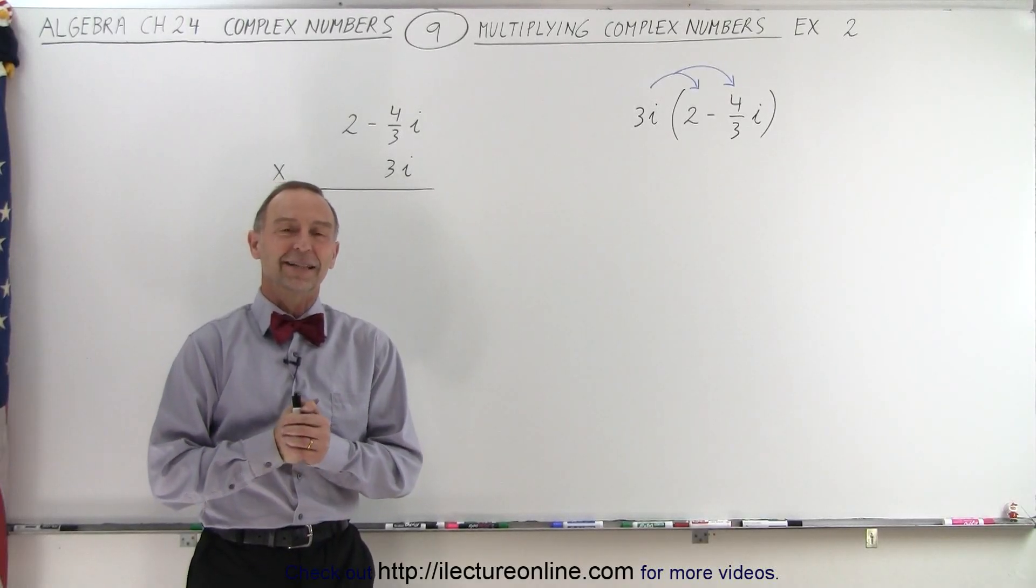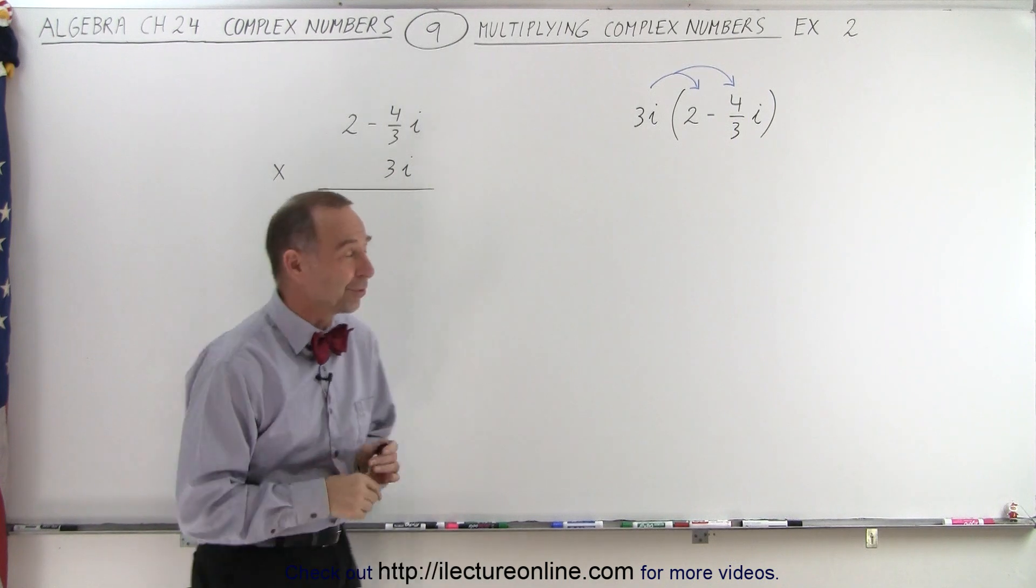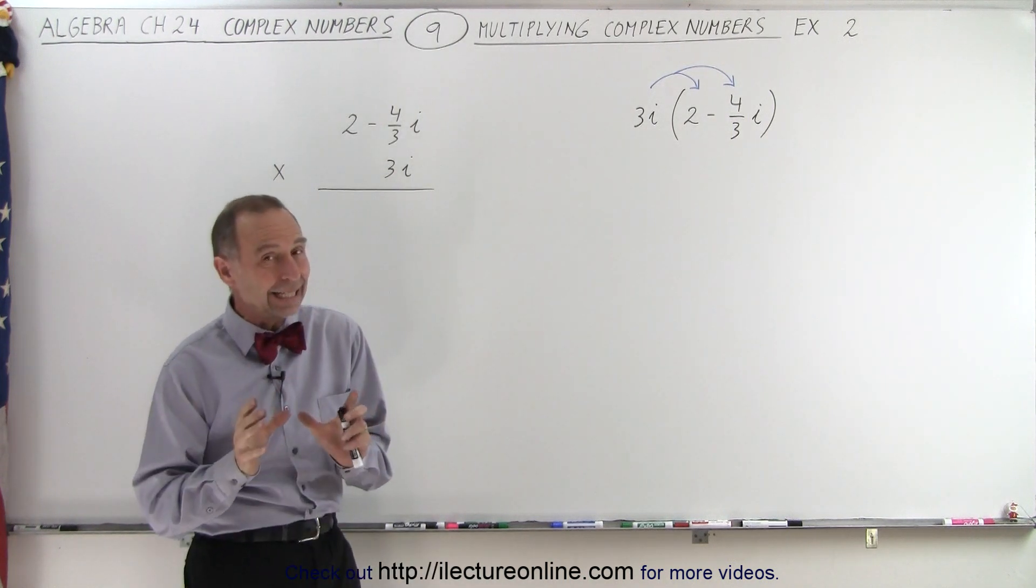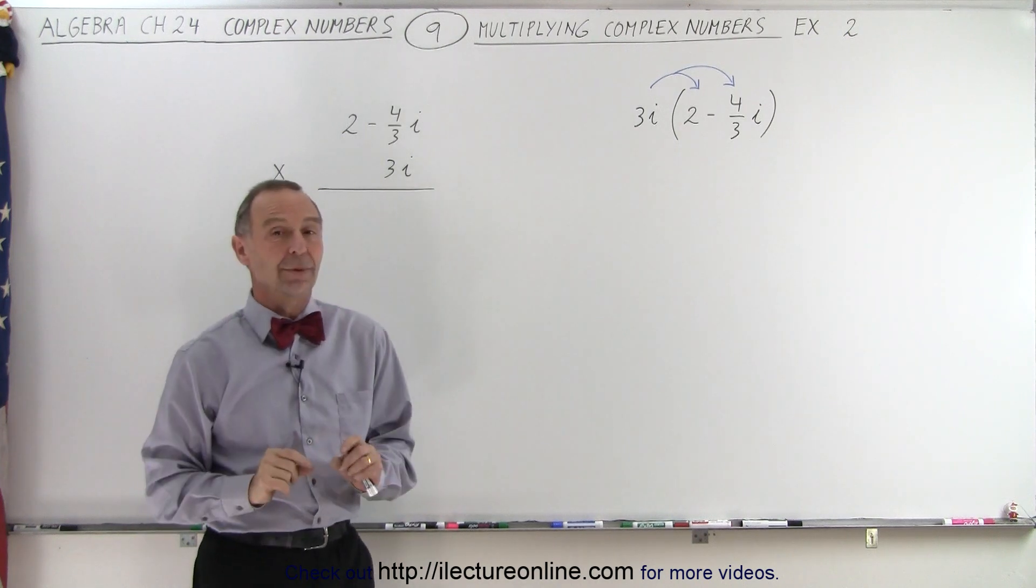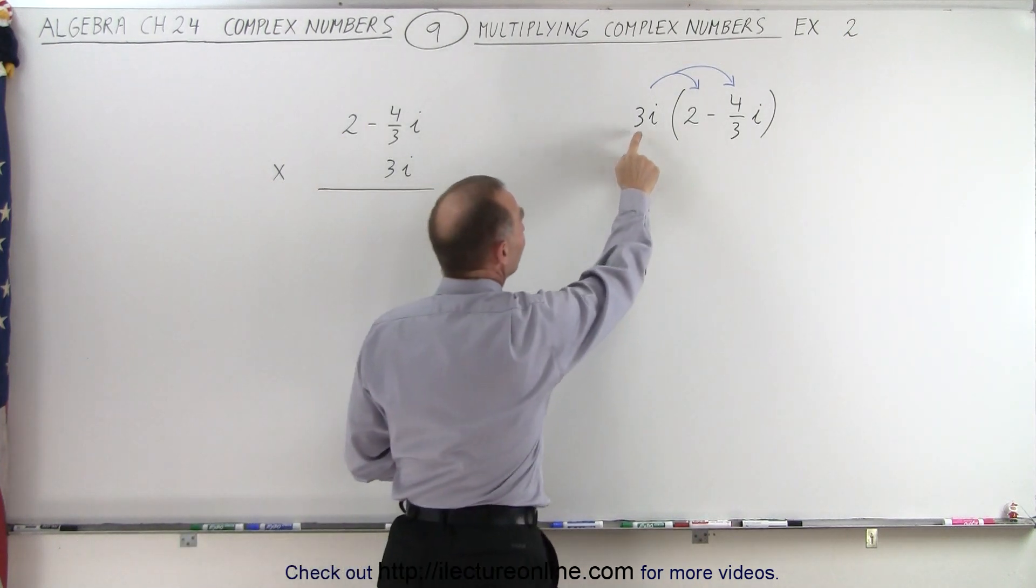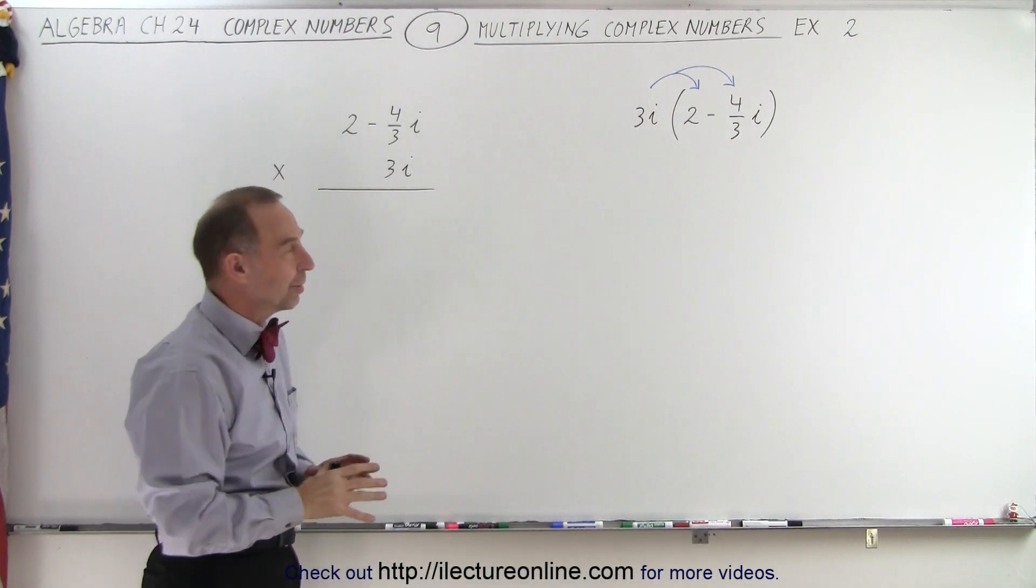Welcome to White Lecture Online. Here's our second example of how to multiply two complex numbers. Actually, technically, we're multiplying an imaginary number with a complex number, because notice when the real part is missing, all we have left is the imaginary part of the complex number.